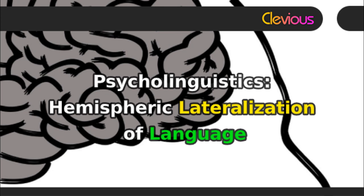This is because, although the right hemisphere saw the word, it is the left hemisphere which speaks. If that same word is presented to the left hemisphere, the patient is able to verbalize the response. As such, split-brain patients have presented substantial evidence that language function is generally lateralized in the left hemisphere.